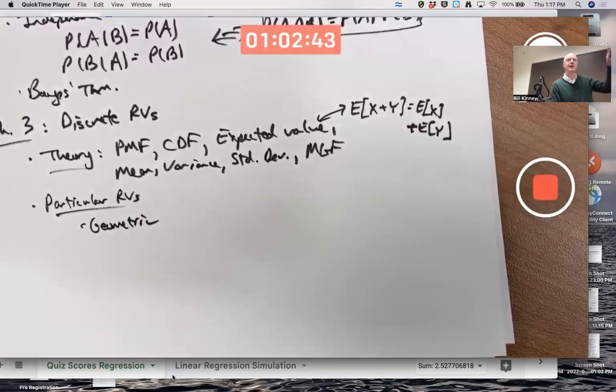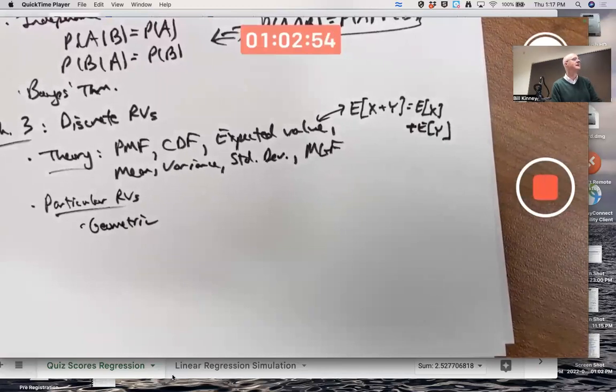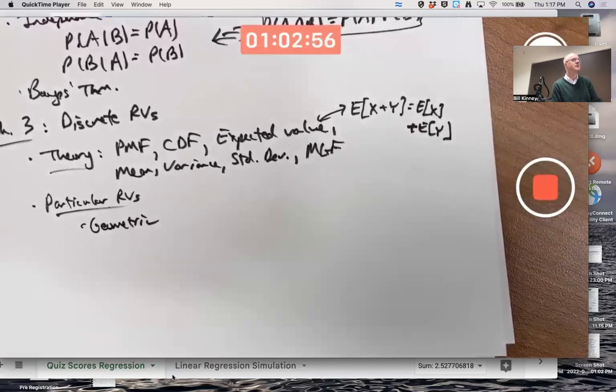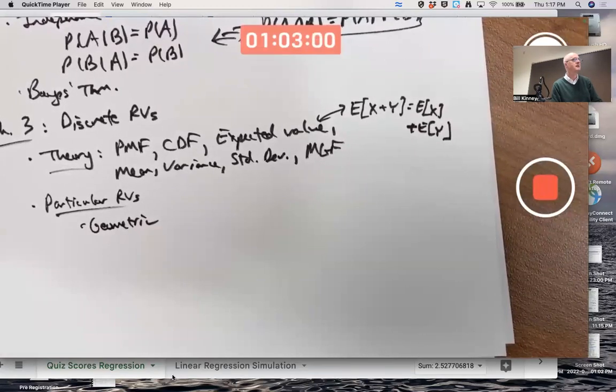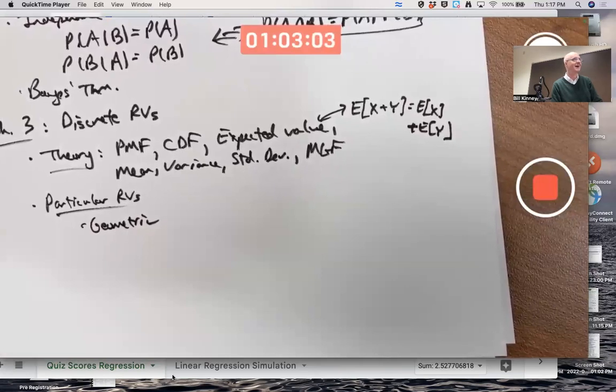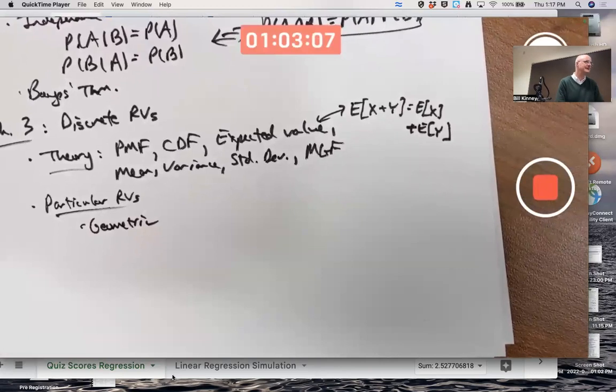X counts the number of trials until the first success. Got a certain probability mass function based on that, that you can use, certain mean, certain variance based on the parameter P. The mean in particular is 1 over P. If you've got a 10% chance of success on any one trial, on average, it's going to take you 1 over 0.1, 10 trials, to your first success.